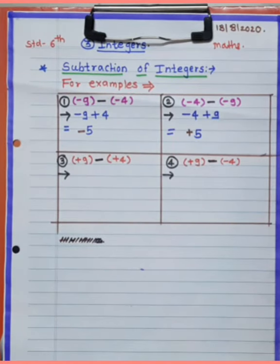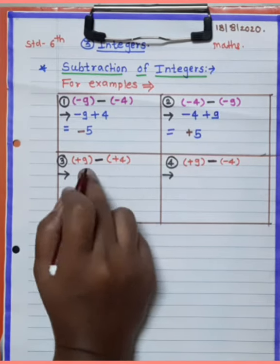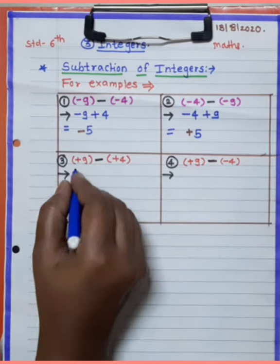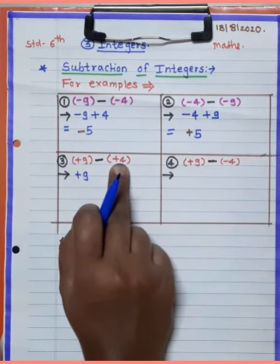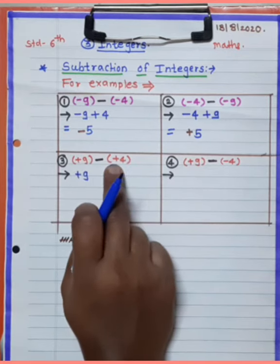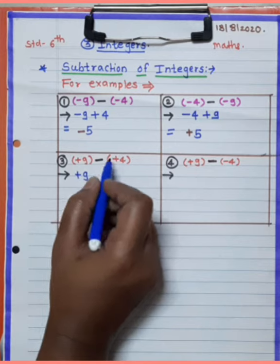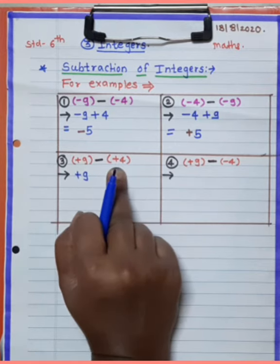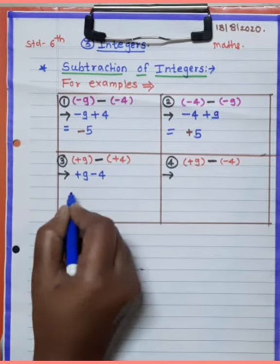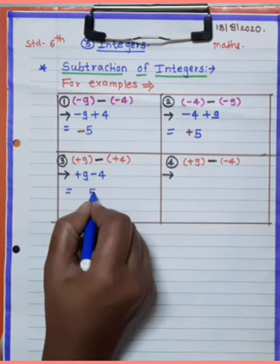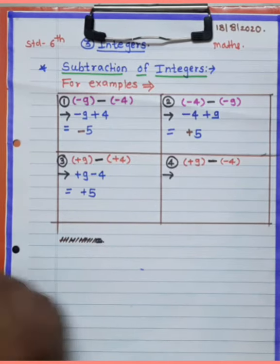The third example involves a positive number. It is plus 9 as it is, write down. Bracket: 9 minus 4 equals 5, and the sign of the bigger number is plus, so the answer is plus 5.